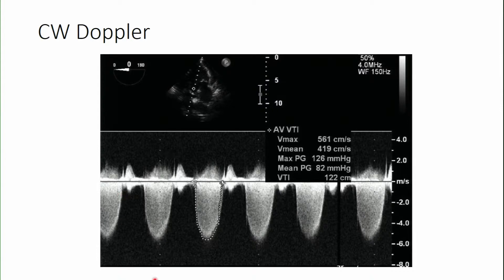Here we see the maximum peak instantaneous gradient being measured by spectral Doppler. We put the Doppler probe through the aortic valve and measure the velocity through the cardiac cycle. Tracing this out, the computer gives us the peak pressure and integrates the area under the curve to give us the mean pressure.